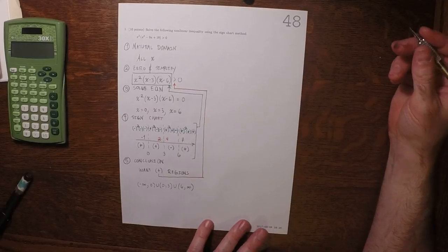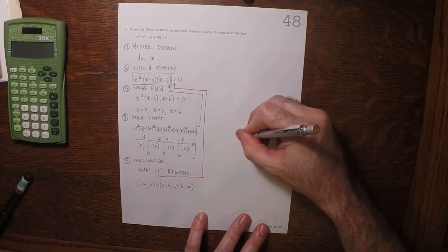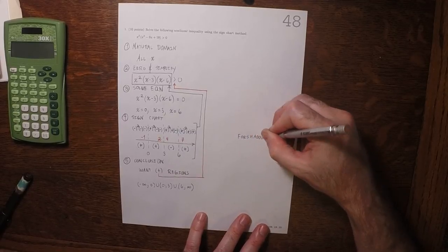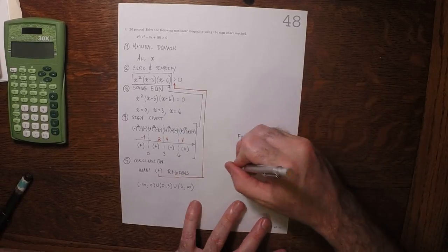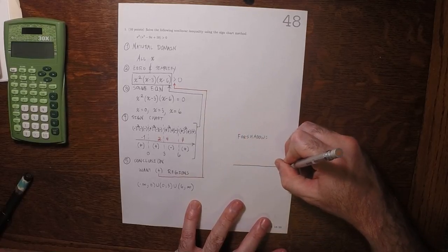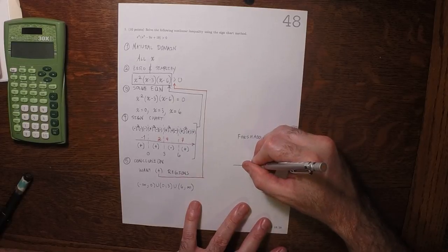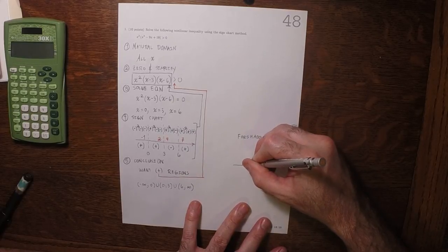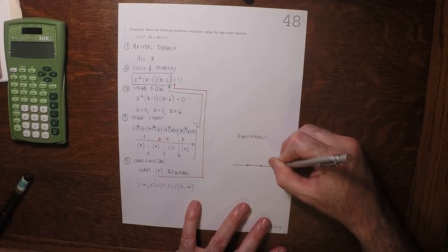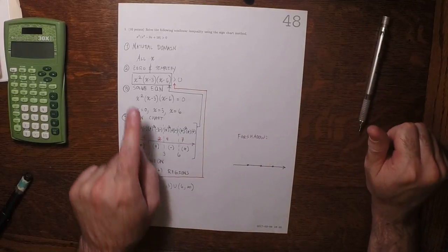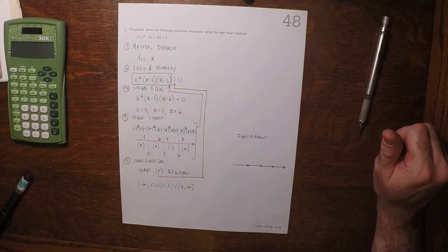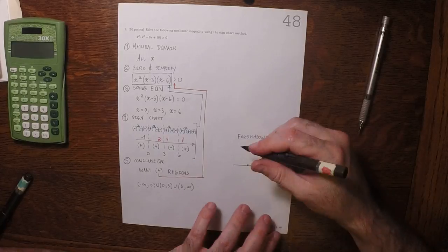But, as a matter of just foreshadowing, soon we'll be able to think about such inequalities in the following kind of way. So, here is 0, and 3, and 6, and this particular expression, that particular expression, the plot will look like this.